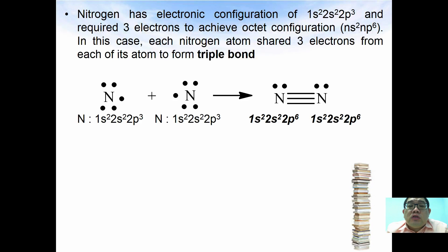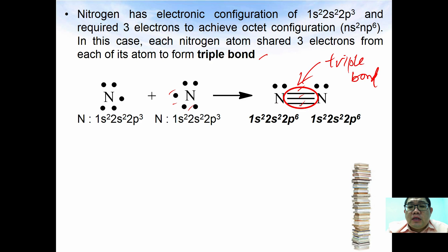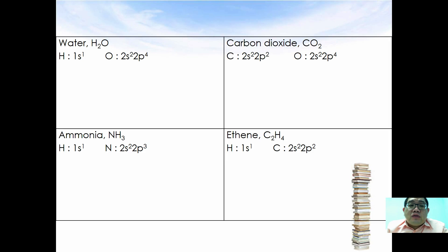Nitrogen has the electronic configuration of 1s² 2s² 2p³, so both nitrogen atoms require three electrons to achieve octet configuration of ns² np⁶. Each nitrogen atom shares three electrons, forming what is called a triple bond. Once nitrogen shares its three electrons to form a triple bond, the total electron count for each nitrogen is 2, 4, 6, 8 — giving 2s² 2p⁶ for each.